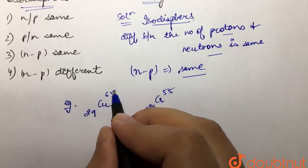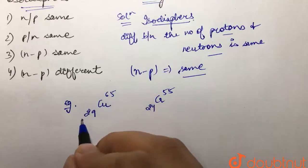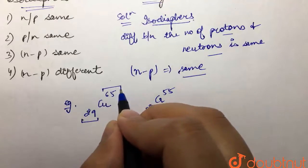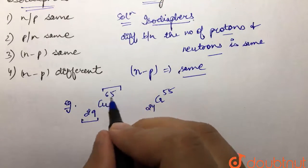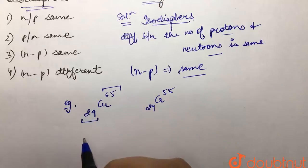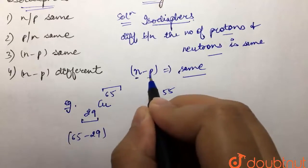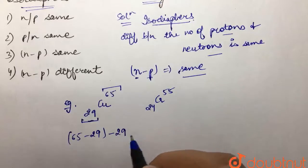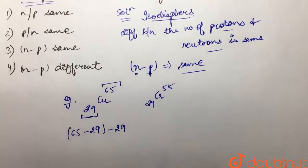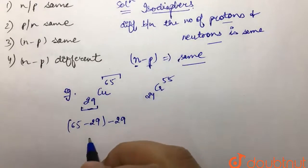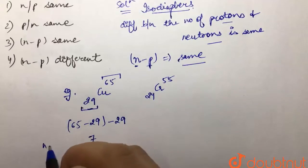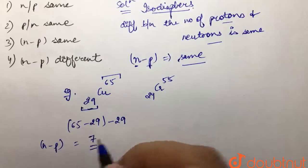The number of neutrons would be 65 minus 29, because these are the number of protons and these are neutron plus proton. So we subtract this 65 from 29 and get the value of neutrons. So 65 minus 29 are the number of neutrons, minus proton which are 29. So this would be 65 minus 29 minus 29. So over here the value comes out to be 7. The n minus p value is 7 over here.